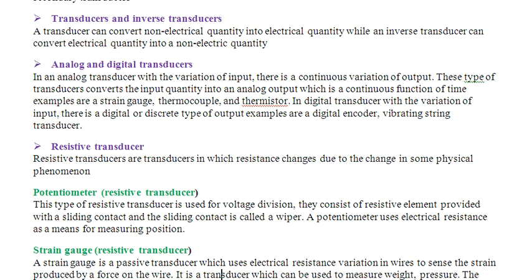In digital transducers, with the variation of input there is a digital or discrete type of output. Examples are digital encoders and vibrating string transducers. Resistive transducers are transducers in which resistance changes due to the change in some physical phenomena. Potentiometer and strain gauge are examples of resistive transducers.